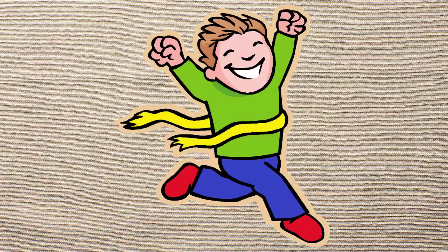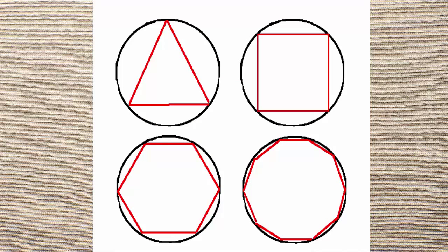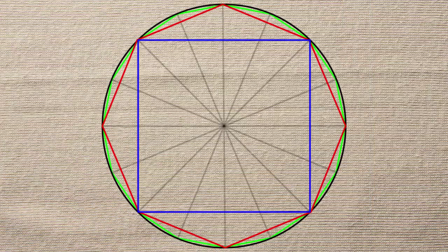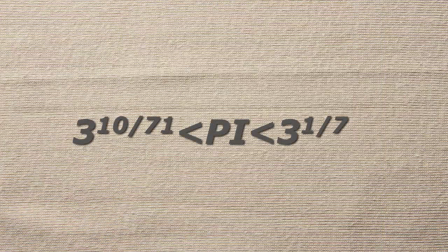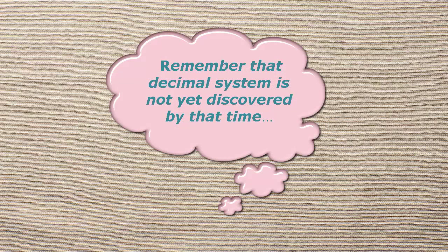Doesn't it look wonderful? By doubling the number of sides of the polygon every time using the above technique, we can get more and more accuracy. Archimedes did it with 4, 8, 16 sides, and lastly reached a 96-sided polygon and approximated pi as 3 + 10/71 < π < 3 + 1/7. Remember, the decimal system had not yet been discovered by that time.